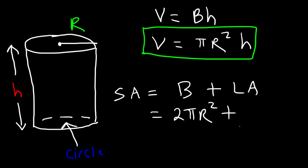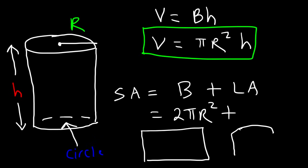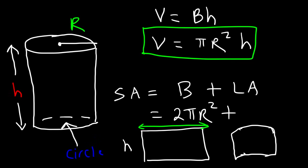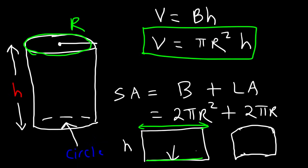And then the lateral area: if you take a piece of paper, you can roll it into a cylinder. The rectangular area of that paper can form the side of a cylinder — that is the lateral area. We know this is h, and the length, if you roll it up into a cylinder, that length highlighted in green becomes the circumference of the cylinder — basically the perimeter around the circle. So it's going to be the circumference 2 pi r, which represents the length in green, times the height.